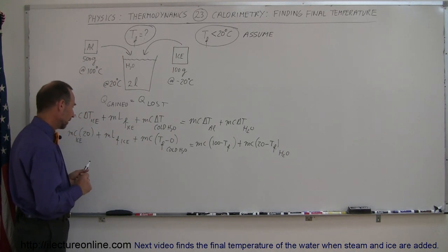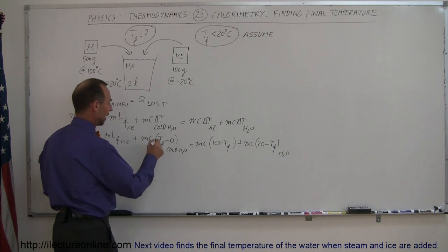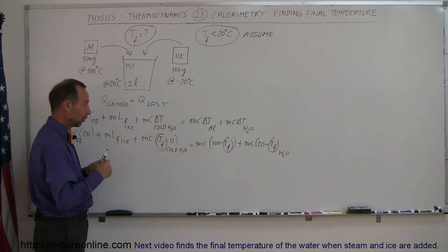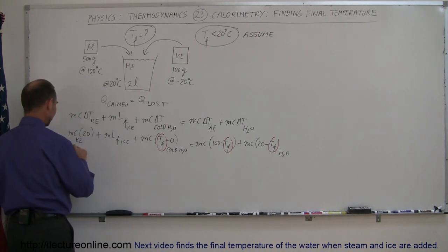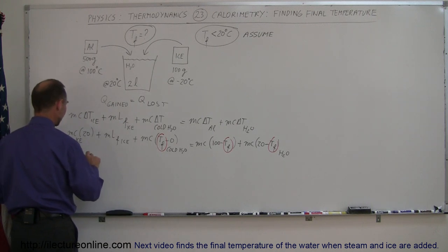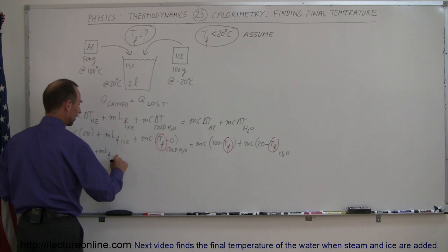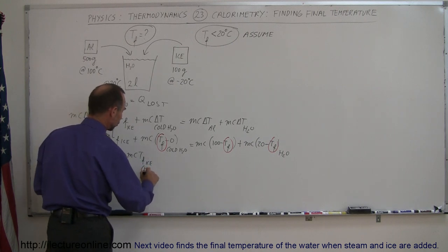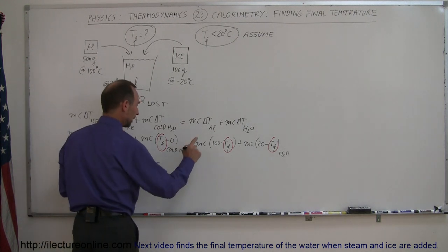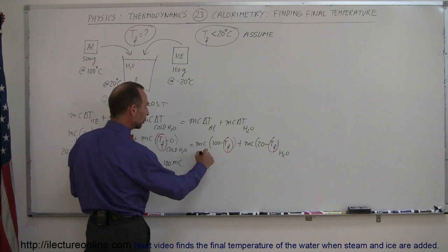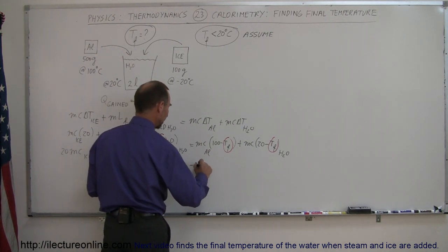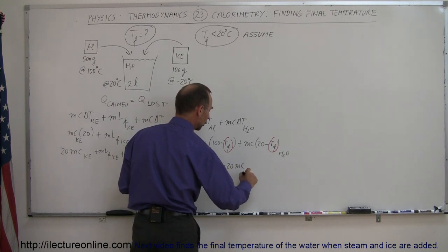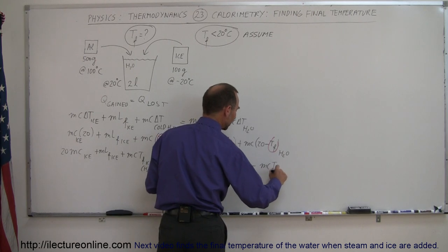Now I have three terms containing T_final, so I want to isolate T_final on one side, which means first getting rid of all the parentheses. Expanding: 20·M·C for the ice, plus M·L_F, plus M·C·T_final for the cold water, equals 100·M·C for the aluminum, minus M·C·T_final for the aluminum, plus 20·M·C for the bucket water, minus M·C·T_final for the bucket water.